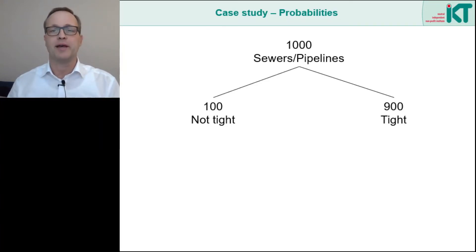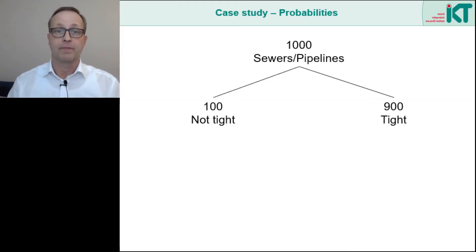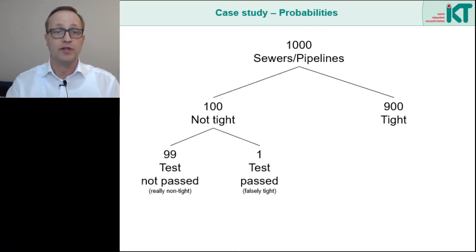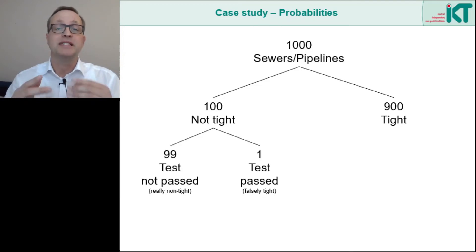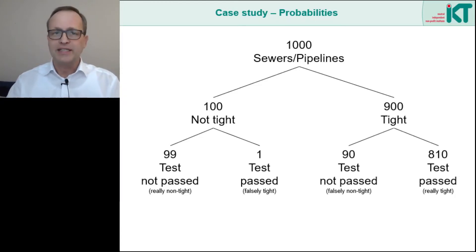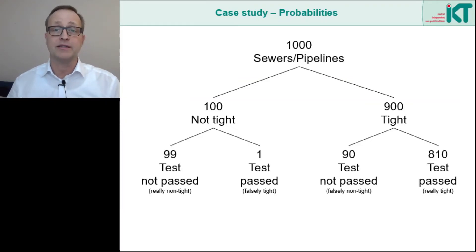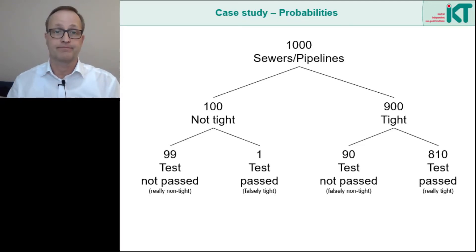We assumed that every 10th pipeline is really leaking — so 100 of the 1000 sewer sections are actually not tight, and 900 are actually tight. Let's start with the sewers that actually leak: 99% of all leaking sewers do not pass the test. However, one time we make a mistake — for example, the shutoff packer is placed on the leak and the test is mistakenly passed. For the tight sewer sections, 90% passed the test: 810 times the result is 'passed' and correct. But in 10% of cases — that means 90 times — the test is not passed, and the result falsely says 'non-tight'.